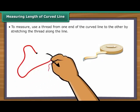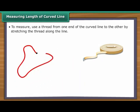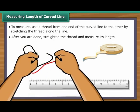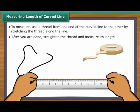You will use the thread from one end of the curved line to the other end by stretching the thread along the line. After you are done, straighten the thread and measure its length. You will know the length of the curved line accurately.